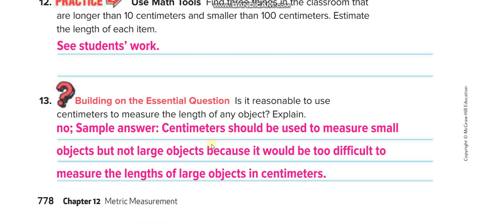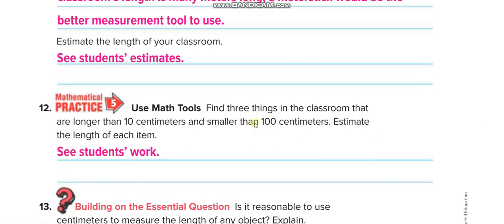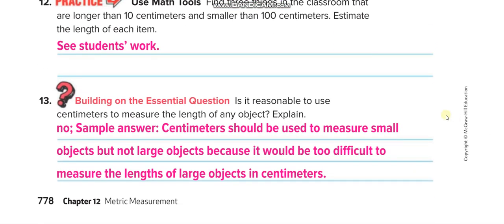When measuring a big object, use meters or kilometers. I hope you understand the lesson. If you did, don't forget to like this video and subscribe to Learn Math with Mr. Saad. Also, I need your answers in the comment box: find three things in your room that are longer than 10 centimeters and smaller than 100 centimeters. Estimate the length of each item. Thank you so much — have a nice day!